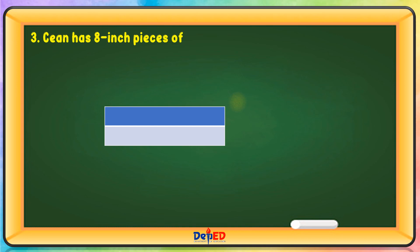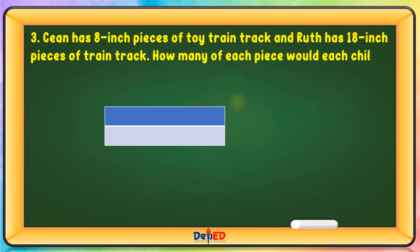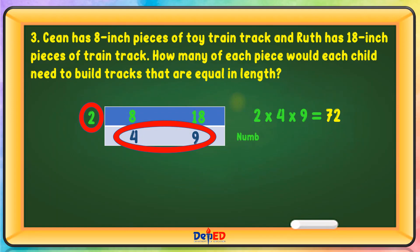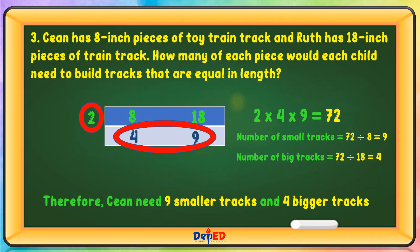Siyan has 8-inch pieces of toy train track while Roof has 18-inch pieces of train track. How many of each piece would each child need to build tracks that are equal in length? 8 and 18 are divisible by 2: 8 divided by 2 is 4; 18 divided by 2 is 9. 2 times 4 times 9 equals 72. Number of small trucks: 72 divided by 8 equals 9. Number of big trucks: 72 divided by 18 equals 4. Therefore, Siyan needs 9 smaller trucks and 4 bigger trucks.